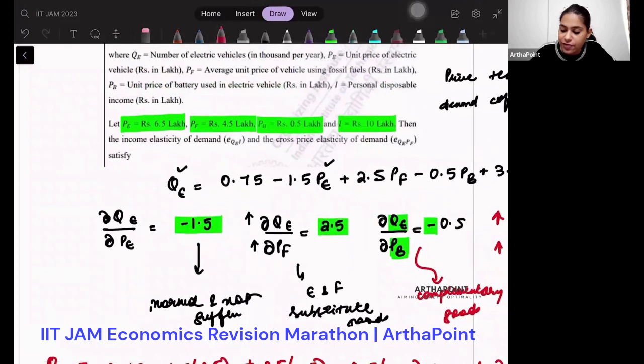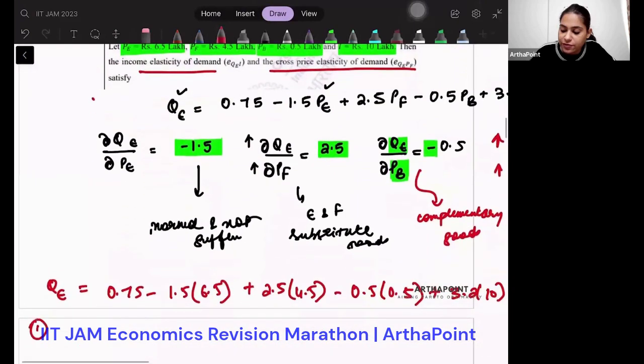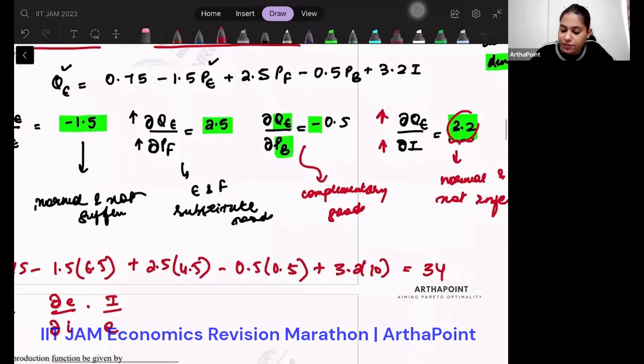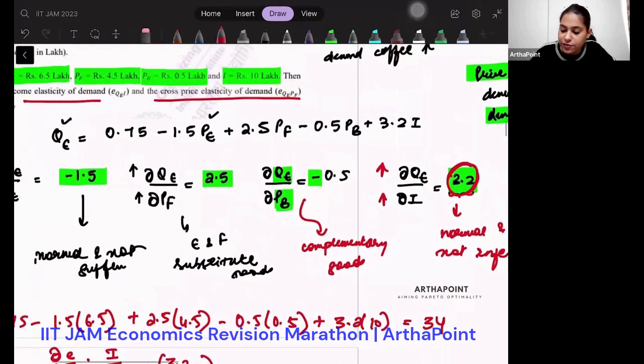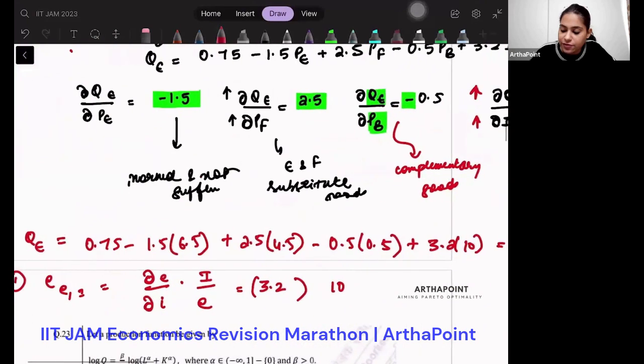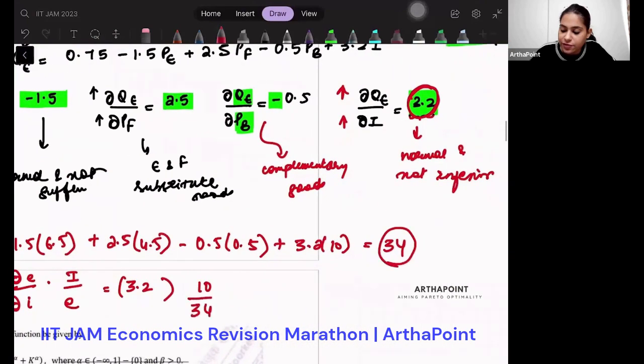But now they are asking us, find income elasticity and cross price elasticity. So let's do that. First of all, what will be income elasticity? Income elasticity will be how E changes as I changes into initial value of I by initial value of E. So how E changes as I changes is given to you as 3.2. This is what we found out. Initial value of income is given to us as 10, and initial value of E is what we have found out as 34. So if we solve this, we will get the answer as 0.941. Very simple.